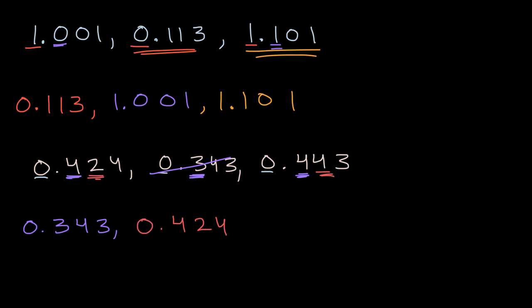And then last but not least, this one right over here. It has the same number of ones as everything else. It has more tenths than this middle one, and the same number of tenths as the left one. But then it also has more hundredths than the left one right over here. So this is the largest of the numbers. 0.443, and we're done.